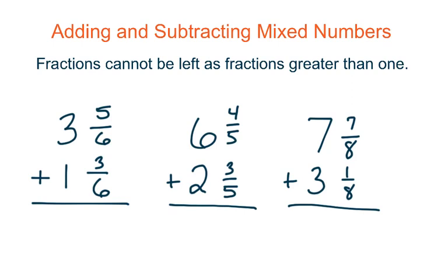Now let's look at these next few problems — go ahead and add these next three. It's really important to keep in mind that fractions can't be left as fractions greater than 1. So when we add, if we're left with a fraction greater than 1, we have to change it. In this first problem we add our fractions first and we're left with 8 sixths, then we add our whole numbers and we have 4. Notice how 8 sixths is a fraction greater than 1 — the 8 is greater than its denominator of 6. So we need to pull out the whole in this fraction greater than 1, the same steps we took in the last lesson when changing fractions greater than 1 to mixed numbers.